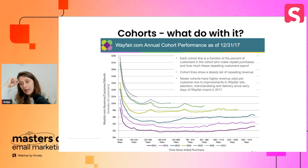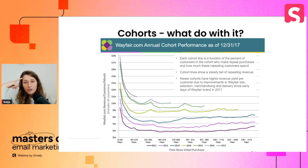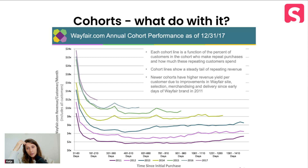Don't worry about all the text on this chart — just look at the lines. This chart is from an annual investor report. Every line represents a cohort — the year when customers were acquired. The bottom line represents customers who became new customers of the platform in 2011, and you can see that with every year the line goes higher and higher. This is the ideal case scenario.